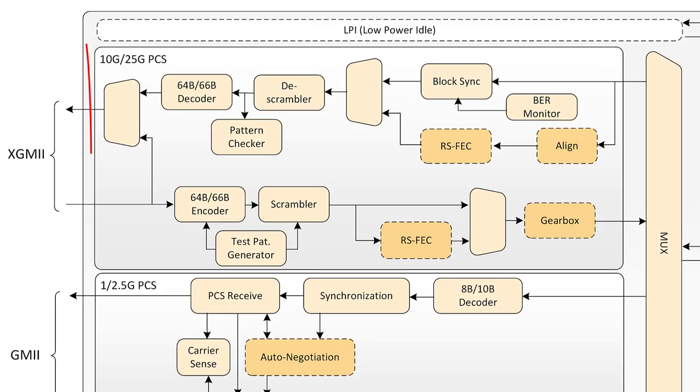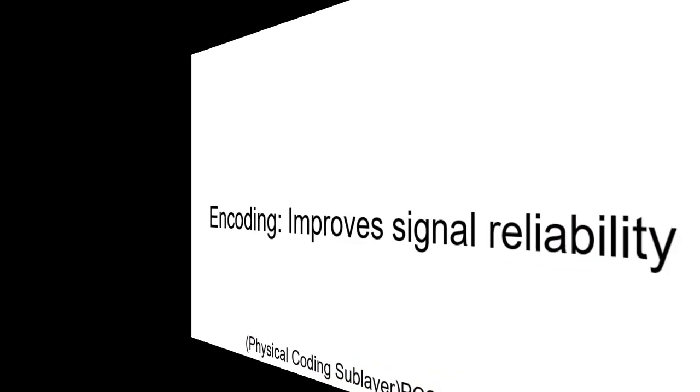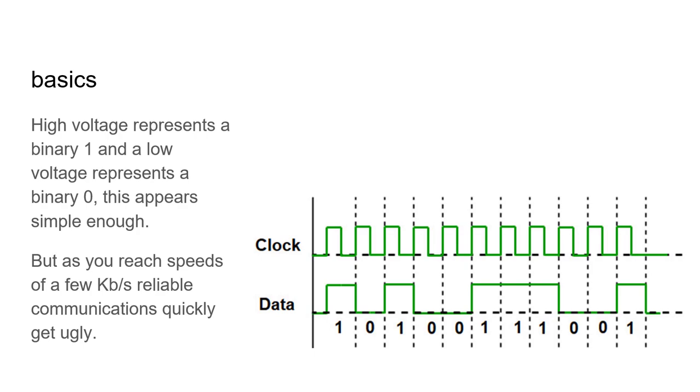The PCS sub-layer is about encoding and decoding. This critical function improves signal reliability. Let's review the basics. Let's say we take a binary one and we represent it with a high voltage, as you can see on the bottom in the graph below. And for a binary zero, we'll just represent it with a zero voltage.